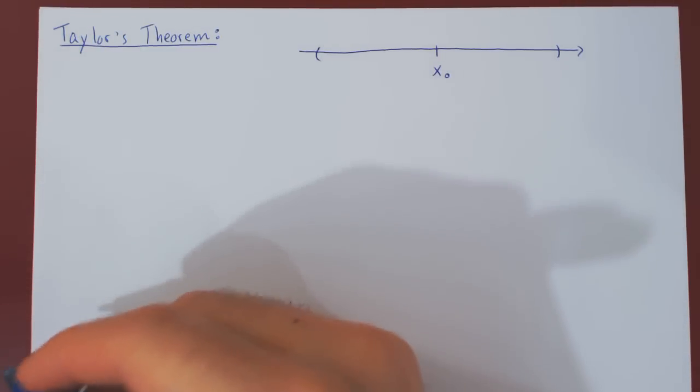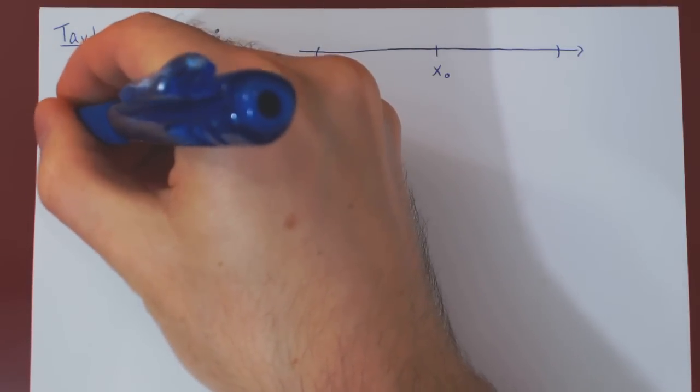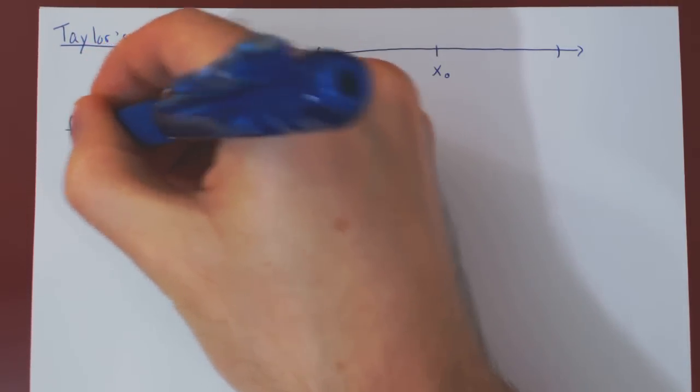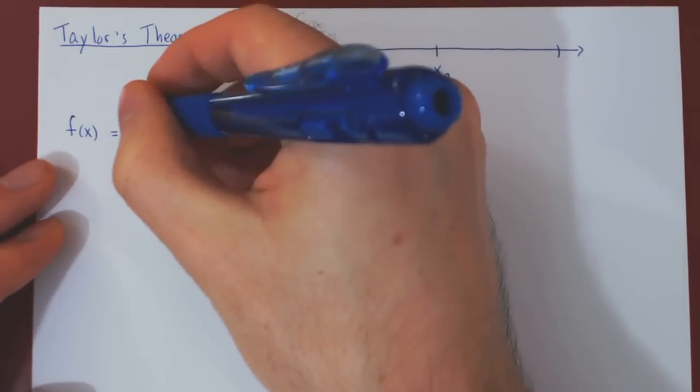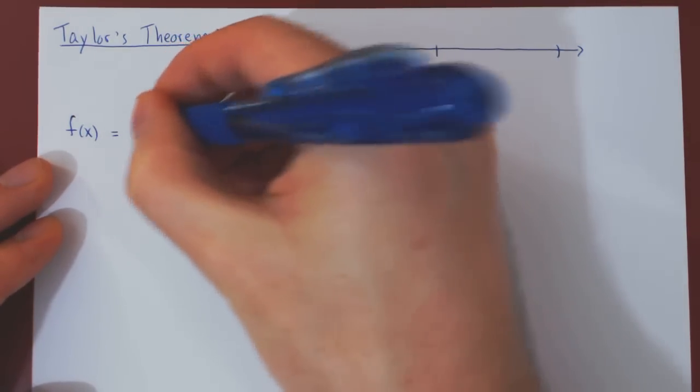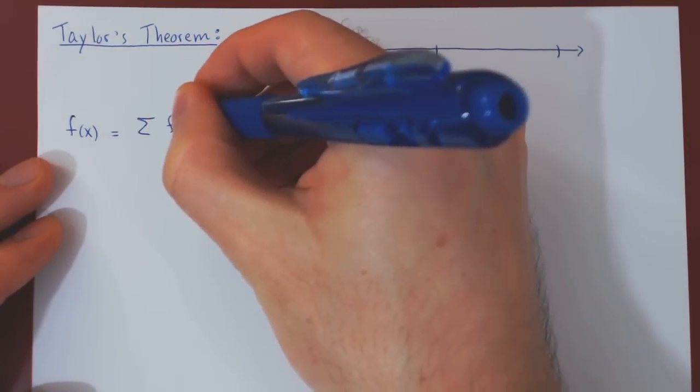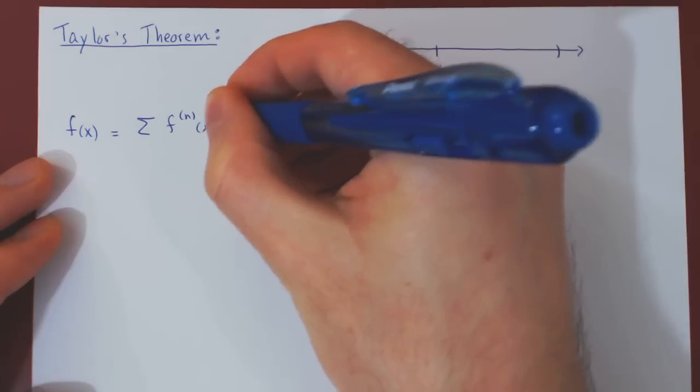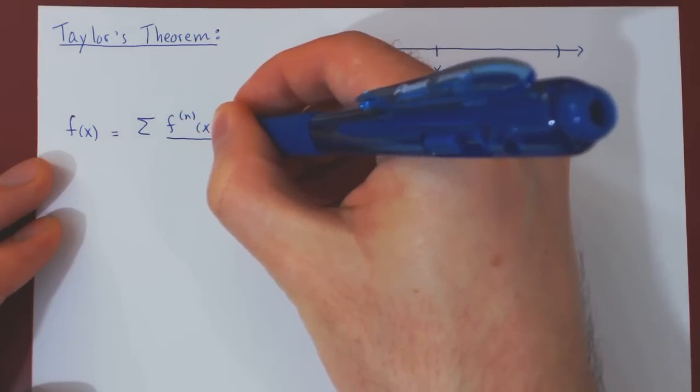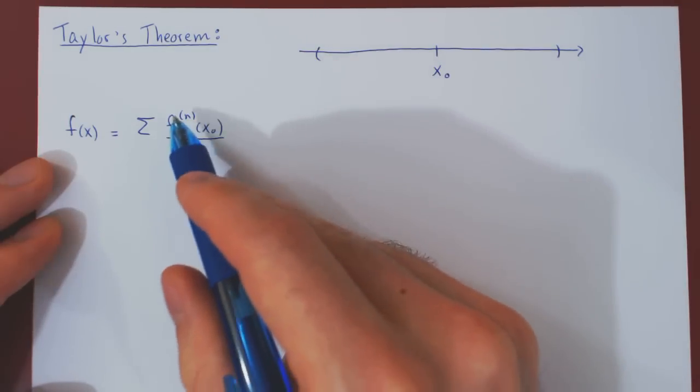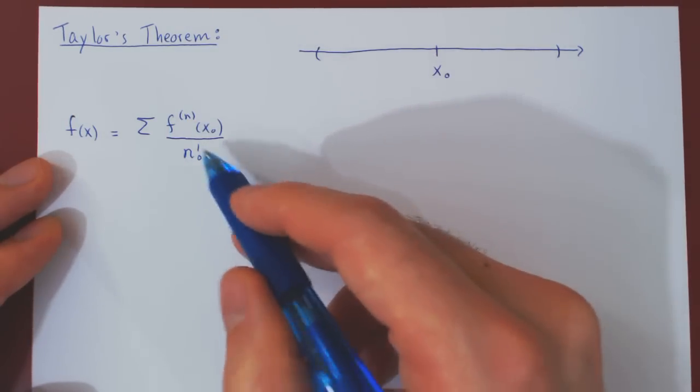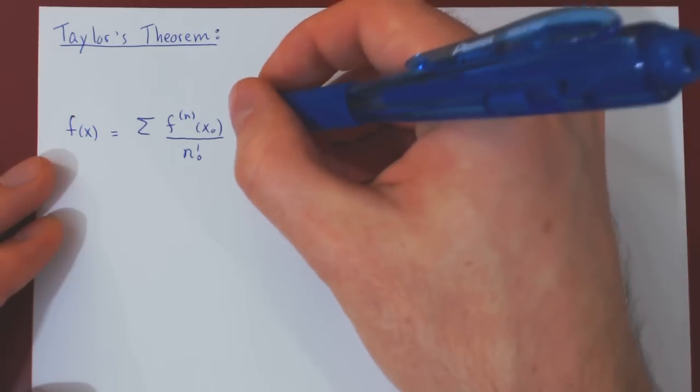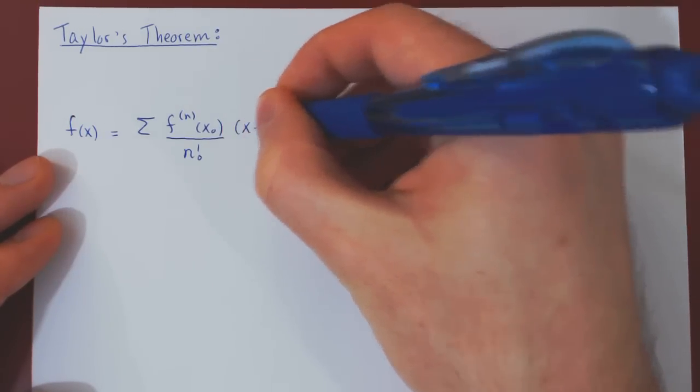Then, here's the statement of Taylor's Theorem. f(x) can be expressed in the following fashion. The first part is the truncated Taylor series of the function centered at x0. We know the coefficients of the Taylor series are given by the nth derivative of the function at x0, the center of the expansion over n factorial, times x minus x0 to the n.